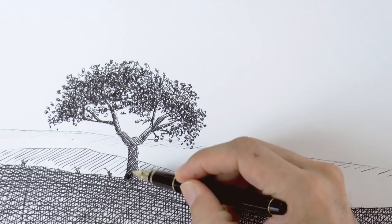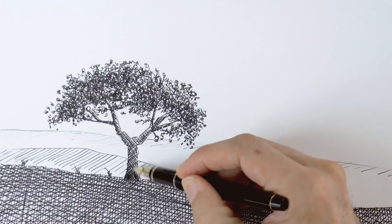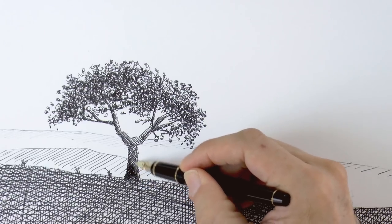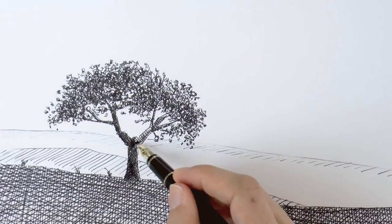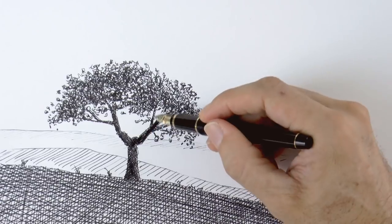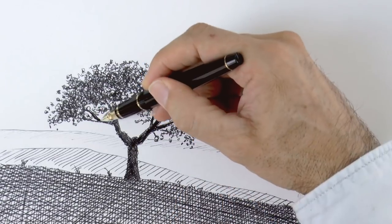I want the trunk of the tree still darker, so I will take some extreme measures and scribble all over it. That's better! That's more like it! All right!